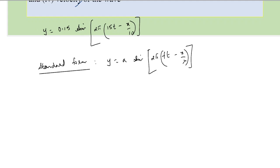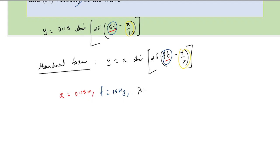Comparing the two forms: the amplitude A = 0.15 meter. For frequency, comparing the term 15t with ft, we can say the frequency is equal to 15 Hz. For wavelength, comparing the last term x/10 with x/λ, it gives us wavelength as 10 meters, and the question stated distances are in meters.